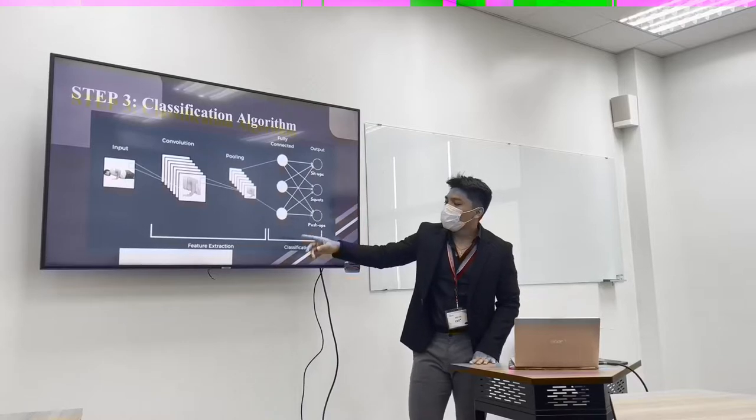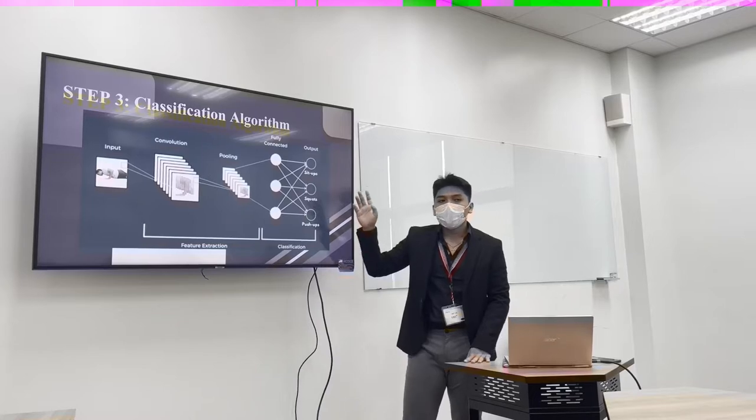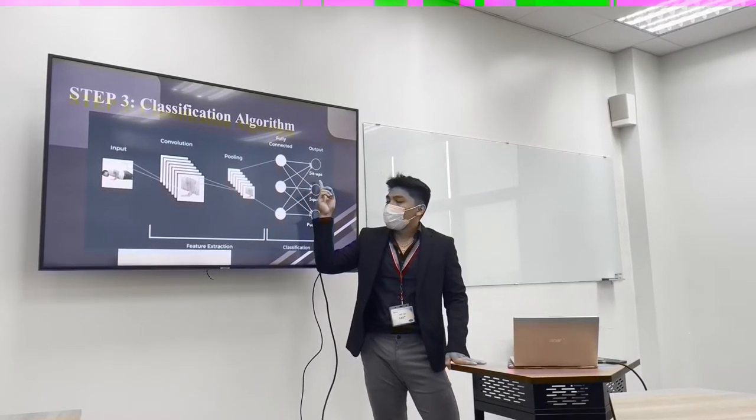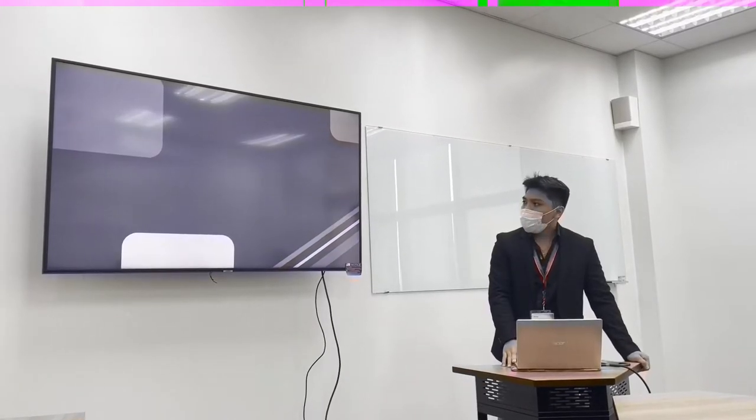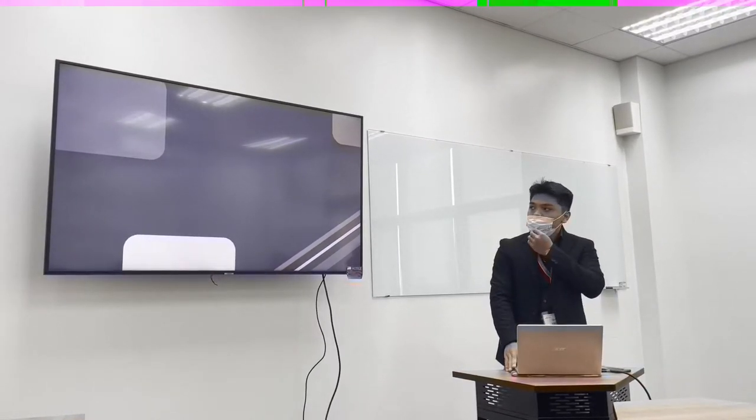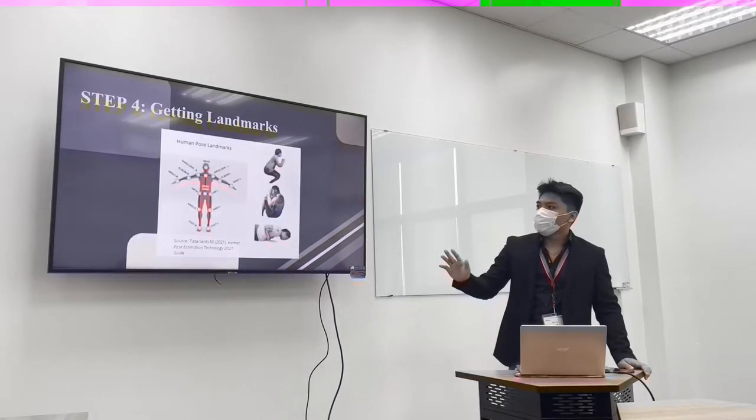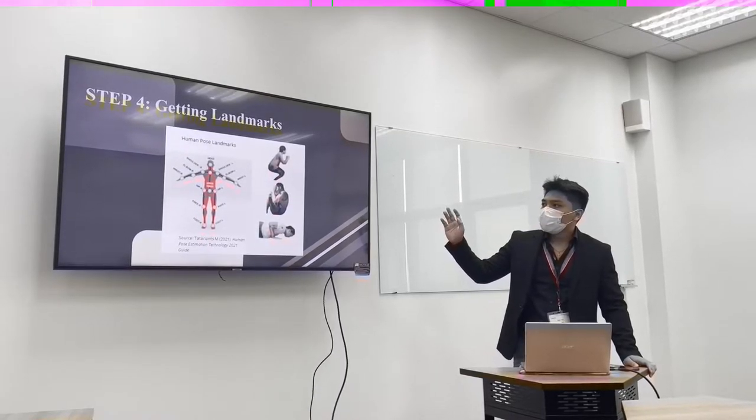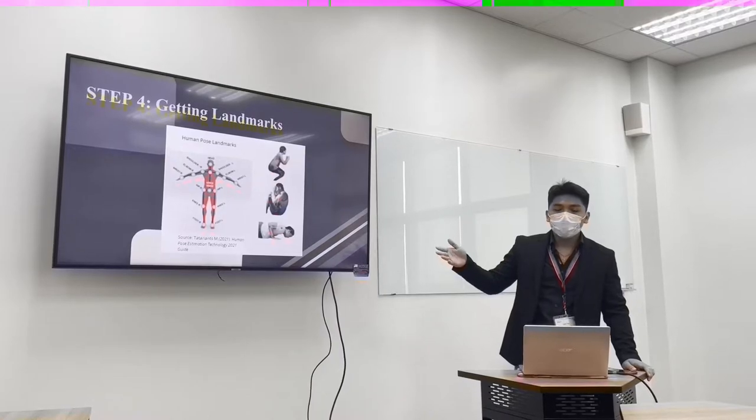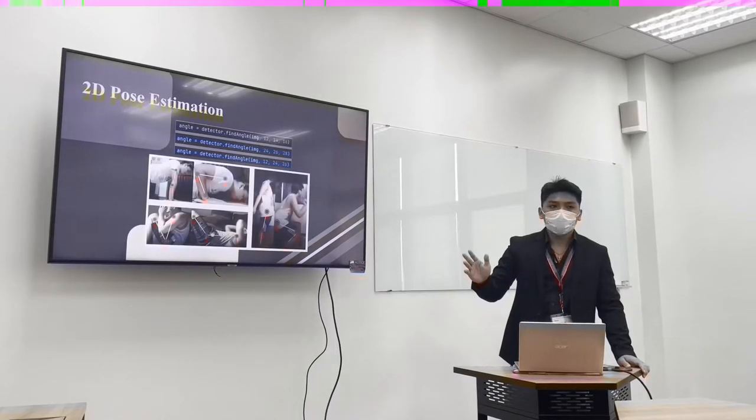Then it will be processed and be fully connected network where it will be classified whether the image is either sit ups, squats, or push ups. So after classifying the image, we will get the landmarks. We specified three points in the landmarks. With the specific exercise, we only get three specific angle points. This is where the 2D post estimation occurs.